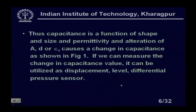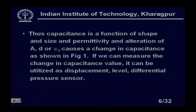Capacitance is a function of shape, size, and permittivity. Alterations of A, D, or εᵣ cause a change in capacitance. If we measure this capacitance value with a bridge or LCR meter, that change can be utilized to make a displacement sensor, pressure pickup, or level gauge. These are the three basic applications of the capacitive transducer.